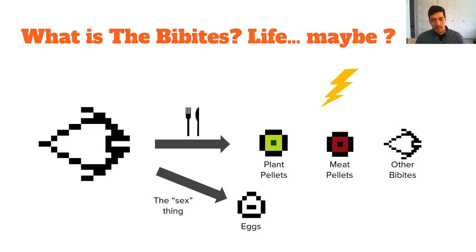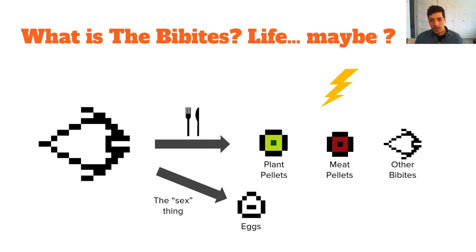As a quick example, the Bibbits have to consume different elements to gain energy — that can be either plant, meat, pellets, and other Bibbits. They then use energy to do everything else, be it moving around, producing pheromones, laying eggs, and so on. I tried to be as descriptive as possible as to what consumes energy, but in fact it's pretty much every action that isn't consuming something.